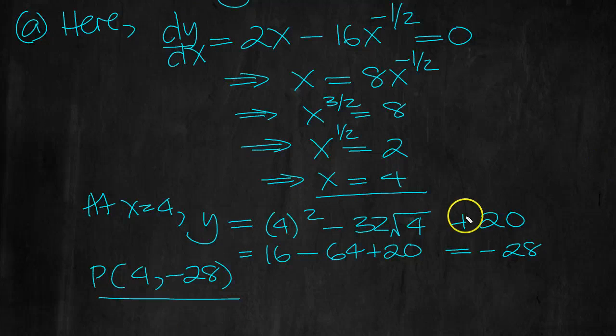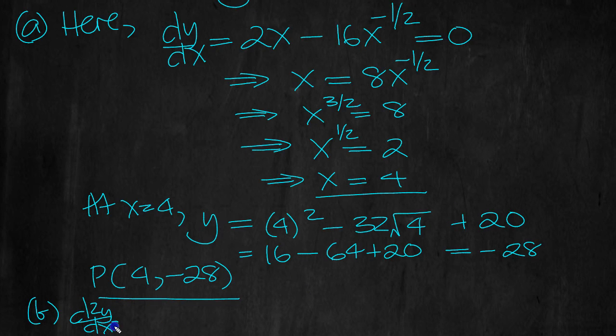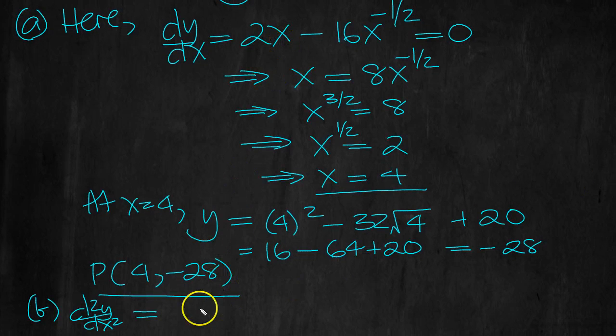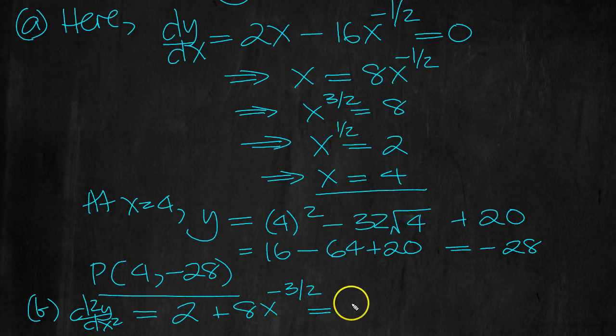Determine the nature of the stationary point. So let's get part b then. We need a second derivative. So d²y by dx² then. Let's differentiate dy/dx. x goes to 1, so 2 lots of 1 is 2. That minus half comes down to make plus 16, half of 8. x to the 1 less, minus 3 over 2 equals...